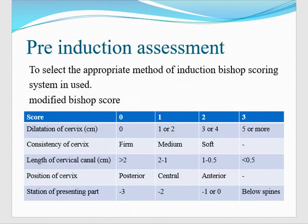Now we plan the induction of labor. First of all, we have to see the Bishop score. In the Bishop score we will look at: dilatation of the cervix, consistency of the cervix, length of the cervical canal, position of the cervix, and the station of the presenting part. We will score each on 0, 1, 2, 3.